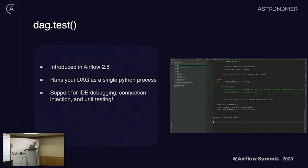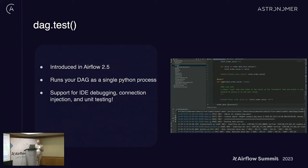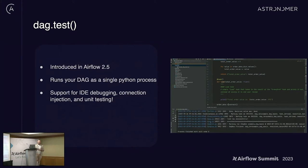The second tool is DAG.test, which we introduced in Airflow 2.5. The basic philosophy is that the Airflow scheduler is, at its core, a very complicated for loop. So why can't we just take the tasks in your DAG and run them as a for loop? Under the hood, when you add these two lines at the bottom — if name equals main, DAG.test — it actually just runs your tasks as a for loop against a local database. And you can run your DAGs directly in the IDE.